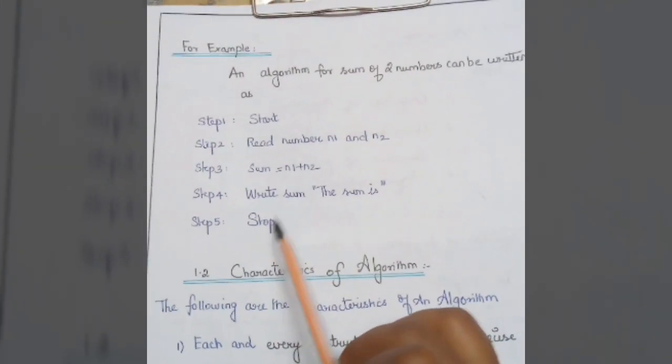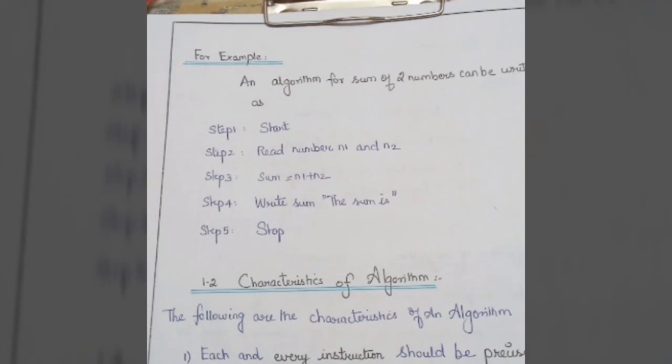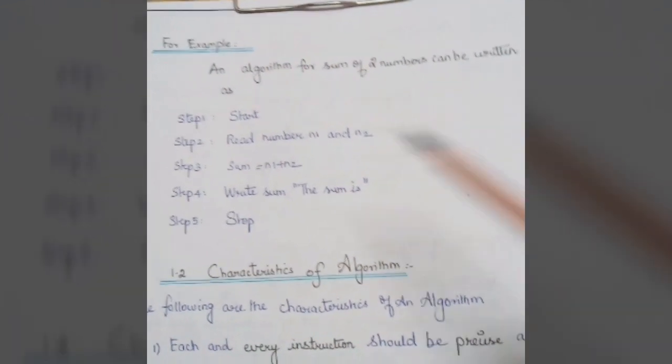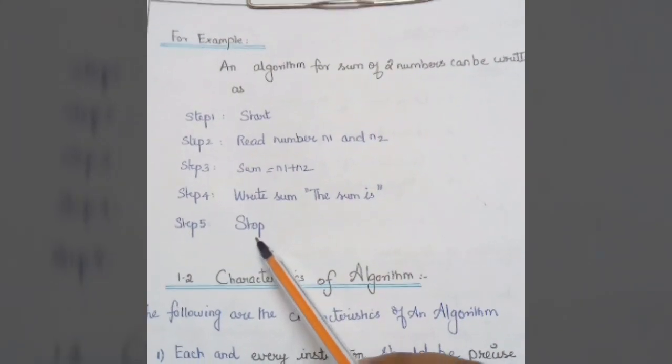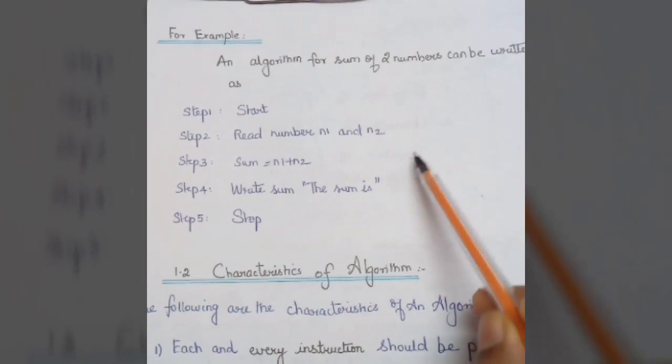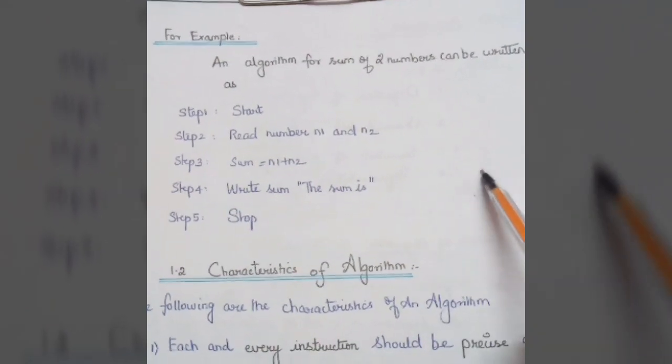This algorithm is an important or expected two-mark question in university exams. How do you write it? As I taught before, you have to write the definition first, get some of the characteristics, and complete it with an example.